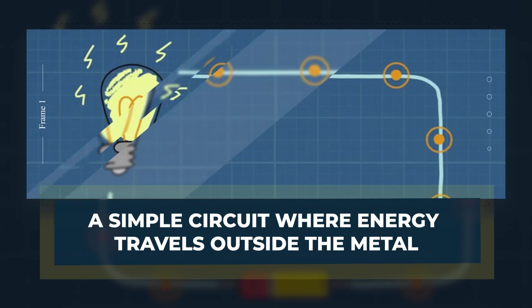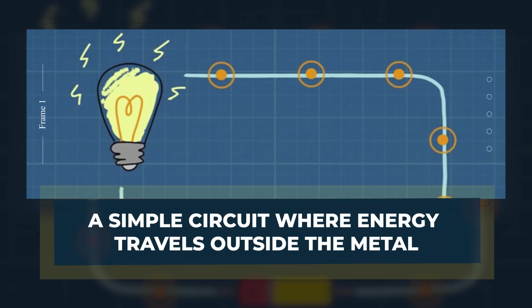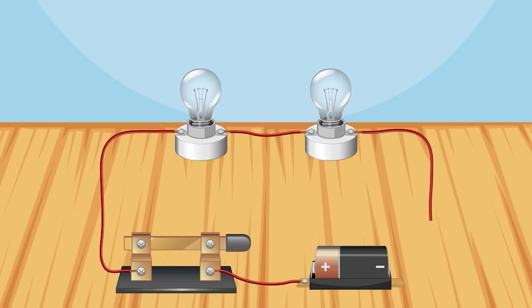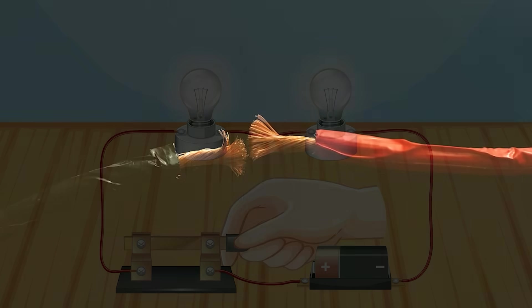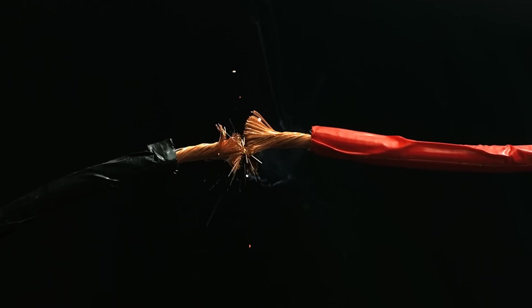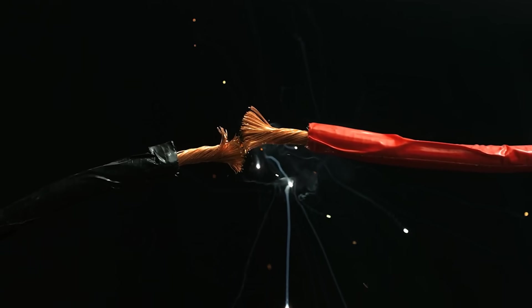A simple circuit where energy travels outside the metal. Take a battery and a bulb connected by two conductors. Before the switch closes, the battery sets up an electric field. But with no steady current, there is no steady magnetic field, and no power is delivered.